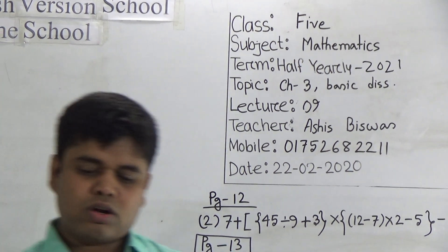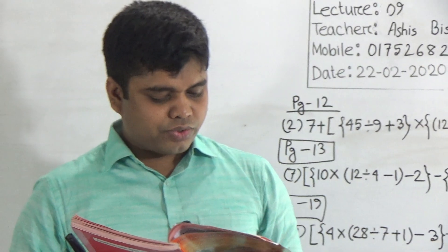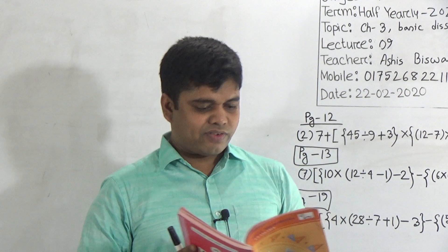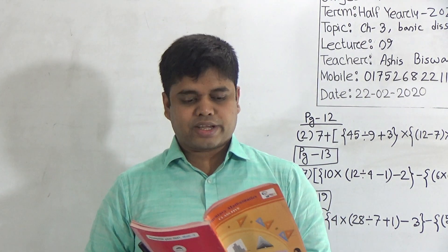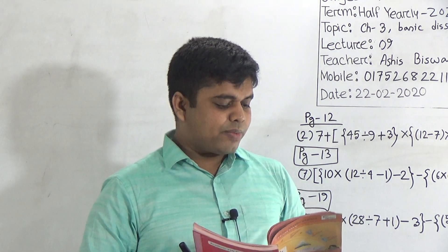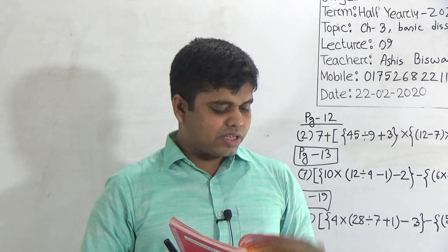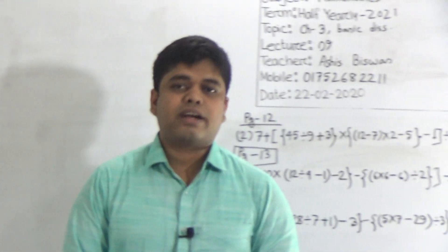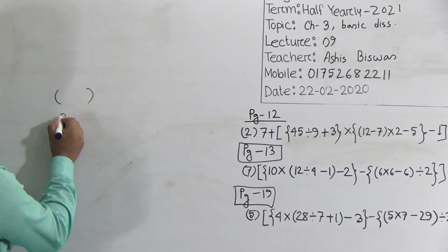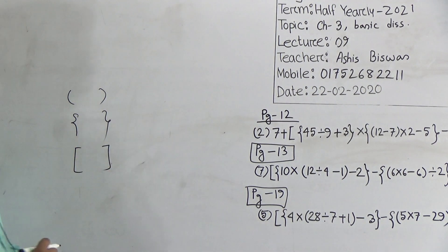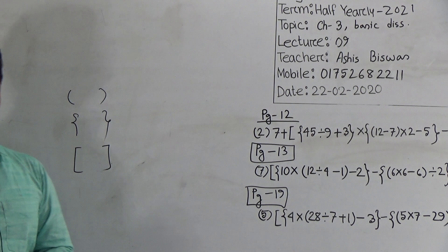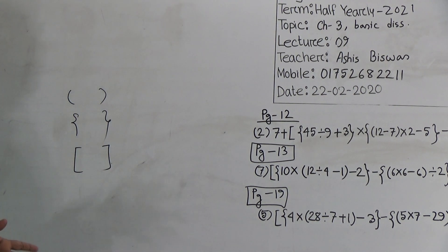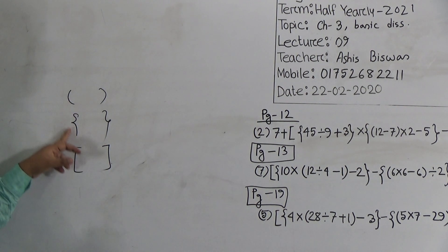I hope all of you have this EMB book. Please open page number 12. From page number 12, we shall first learn 'Uses of Brackets.' Some simplification is given and we need to solve it. Do you know how many types of brackets are there? There are three types of brackets: first bracket, second bracket, and third bracket. This is an important short question for you — how many brackets are there? The answer is: there are three brackets.